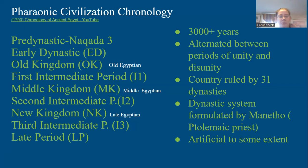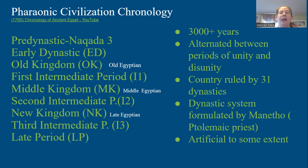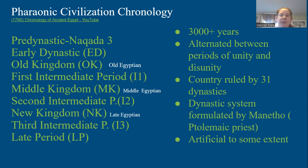Then you have a second period of centralization, which is the Middle Kingdom, followed by another breakup of the state. Then you have the New Kingdom. After the New Kingdom there is a final span of time when centralized authority breaks up yet again. Then you have the Late Period, when the state goes back and forth between being controlled by a native dynasty and being controlled by foreign hands. The Late Period roughly ends with the Battle of Actium, when Egypt becomes a province of Rome.